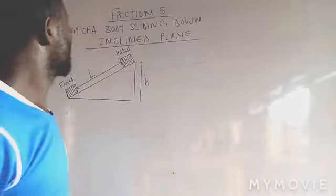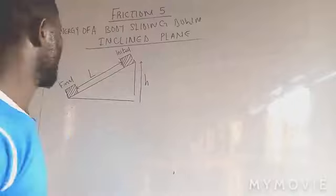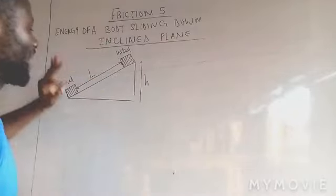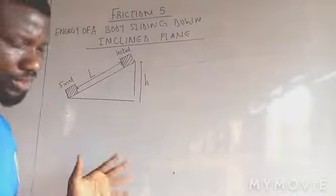This is friction 5. We want to deal with a body sliding down an inclined plane in terms of energy only.